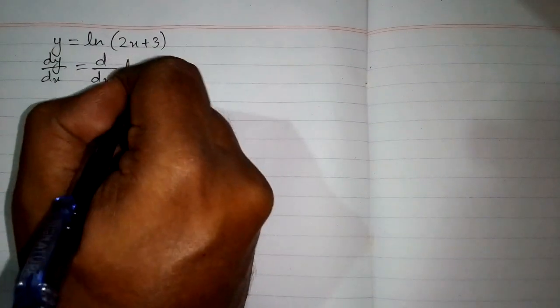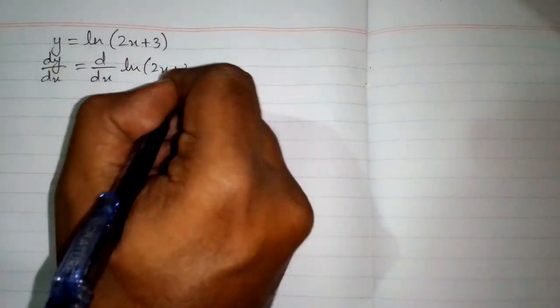In this video we will find the derivative of the function y equals ln of 2x plus 3, where ln is the natural log. First we will differentiate both sides with respect to x. So we have dy by dx equals d by dx of ln of 2x plus 3.